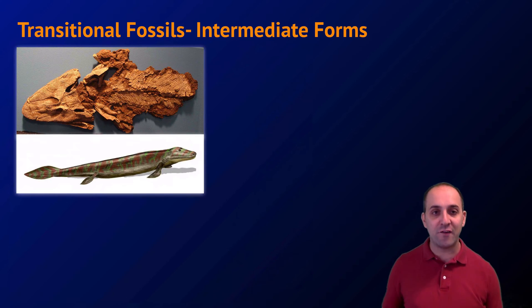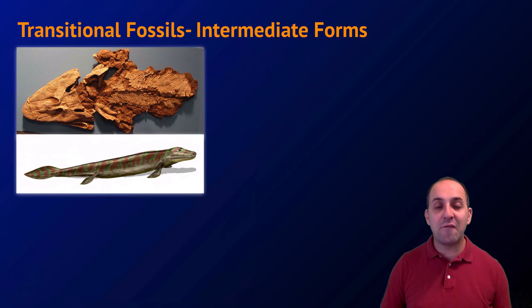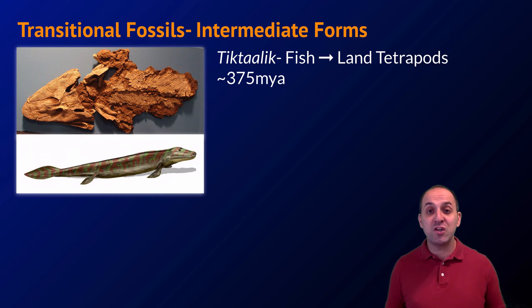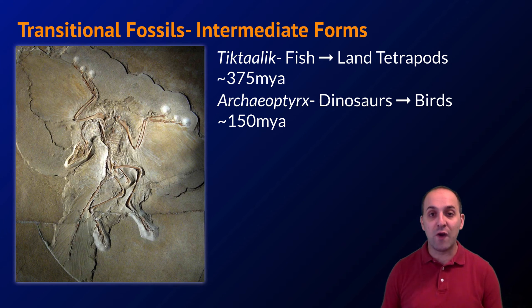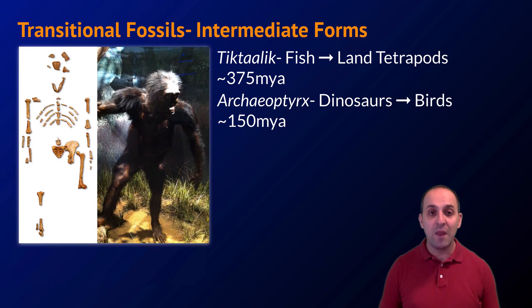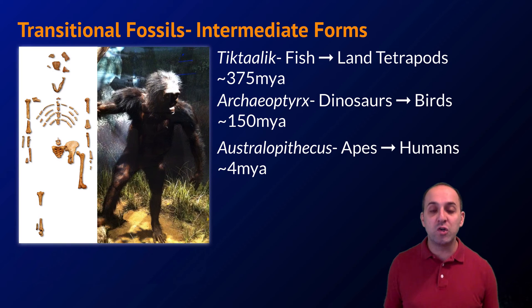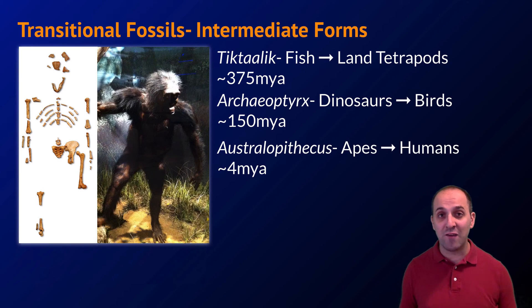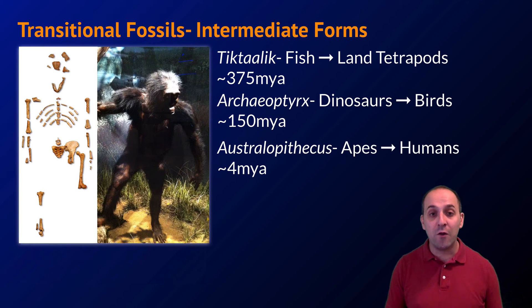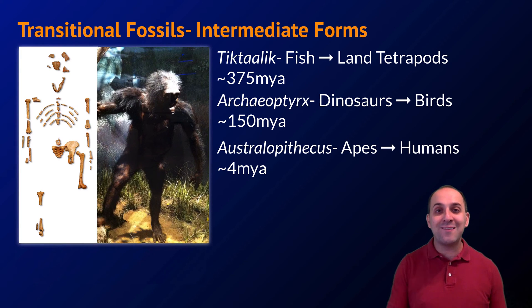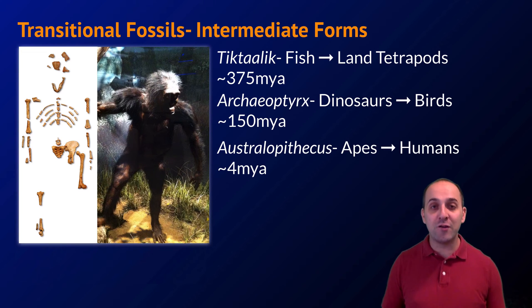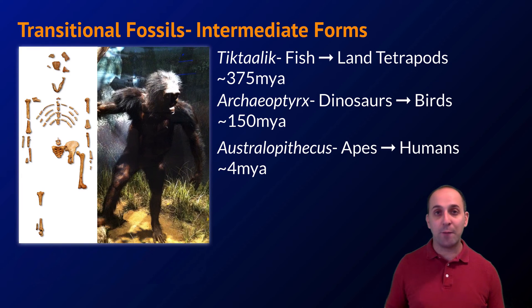We can also see so-called transitional fossils or intermediate forms — organisms that show characteristics spanning between two major modern lineages. Tiktaalik is a transitional fossil between fish and land-based tetrapods like amphibians, from about 375 million years ago. Archaeopteryx shows the transition from dinosaurs to birds, from about 150 million years ago. And the Australopithecus fossil known as Lucy shows the transition from apes to humans, from about 4 million years ago. Not only are the transitions important, but the timing is also important — the fossil record does not show temporal inconsistencies, making it powerful evidence for continual branching evolutionary processes.